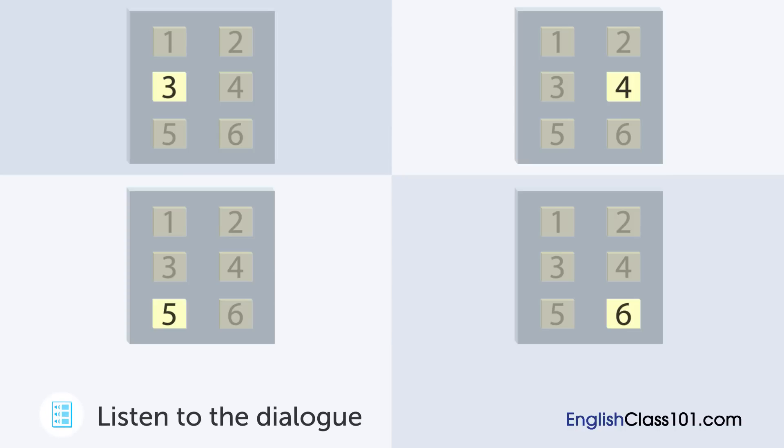Excuse me, where are the women's clothes? On the third, fourth, and fifth floors. Which floor has coats? The fourth floor. The elevator is right over there. The fourth floor? Okay, thank you.